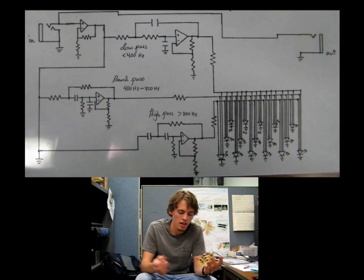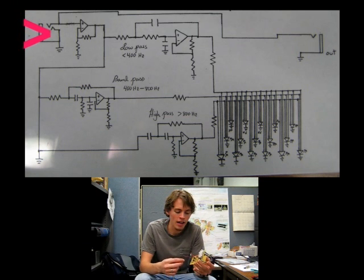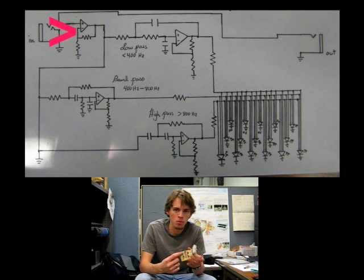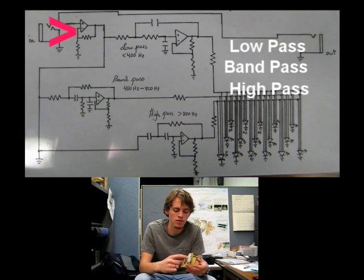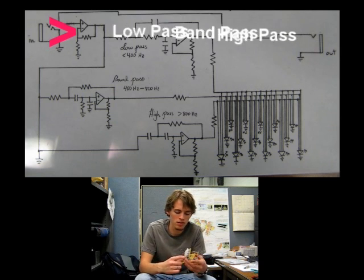So how it works is you take your signal in—it would be my guitar signal—and you would plug it in here, and this op amp would intensify the signal, amplify it a little bit, sending it to these bandpass filters or high-pass, low-pass filters.